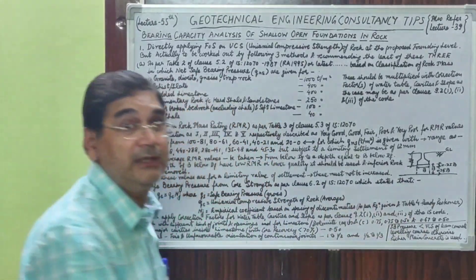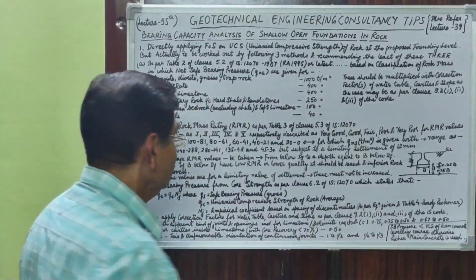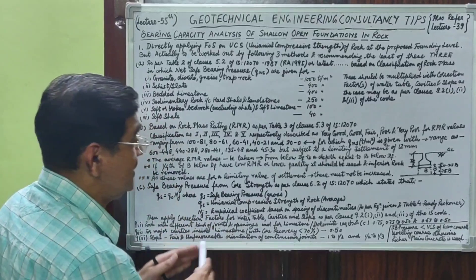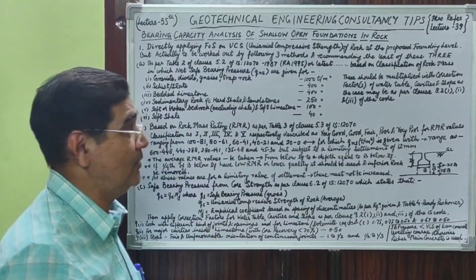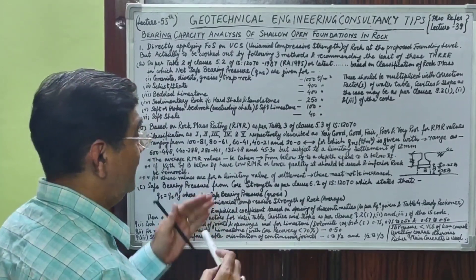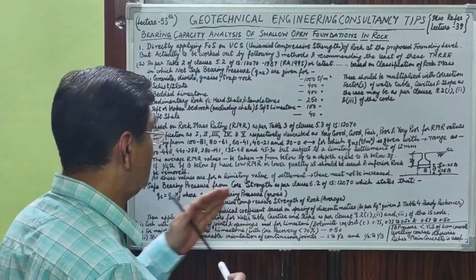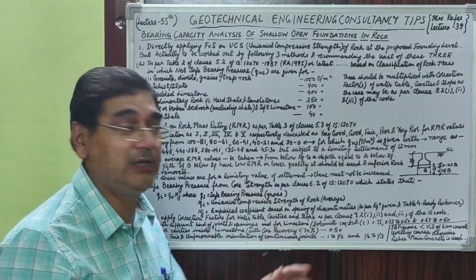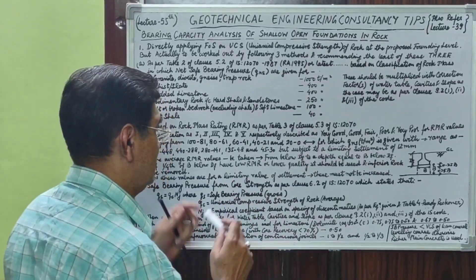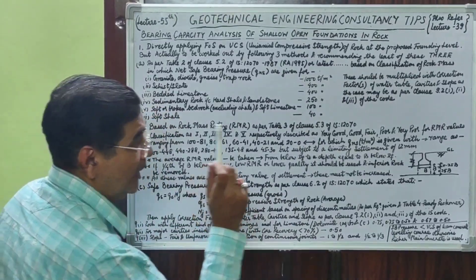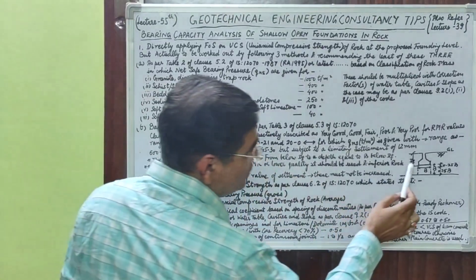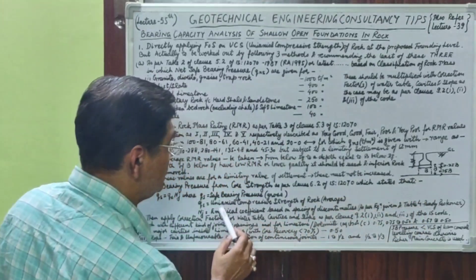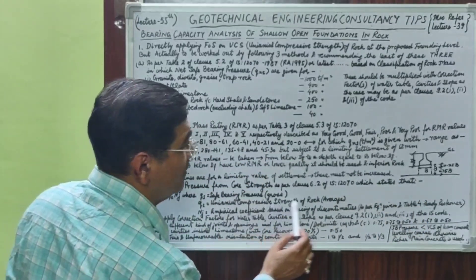Point C is the core strength method, based on UCS (uniaxial compressive strength) test values. Whatever our influence zone is, the UCS values within it are averaged.